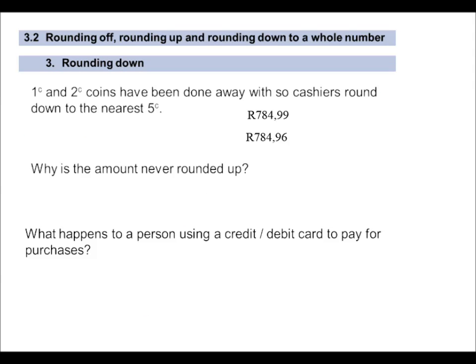Let's see when we round down. As I've said before, one cent and two cent coins have been done away with, so cashiers round down to the nearest five cents. What does that mean? Well, if your bill came to 784 rand 99, you are going to be paying 784 rand 95. We are going to round down. In the normal rounding rules, you would have looked at the round off place. But when we round money down, you take the nine to the lowest five. So whether your bill is 784 rand 99 or 784 rand 96, you are going to pay 784 rand 95.